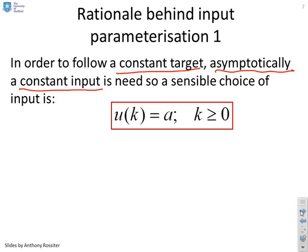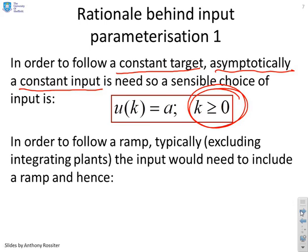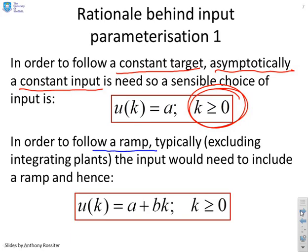The rationale behind the input parameterization: in order to follow a constant target, asymptotically you're going to need a constant input. Therefore, a sensible choice of input is clearly U equals a constant for all future samples — that's all PFC is doing. It says: I need a constant input in the future to meet this target; let's ask what this constant input should be. Conversely, if we wanted to follow a target which had a ramp, then the input would also have to be a ramp, and we would use an input of the form U(K) = A + BK.